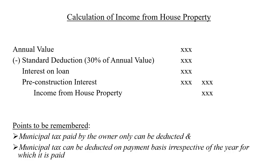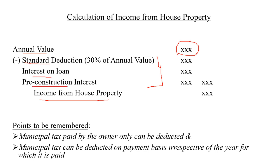First I will explain the format — what are the items that you have to deduct after calculating annual value. After calculating annual value, how to calculate income from house property? We have to claim three deductions only: standard deduction, interest on loan, and pre-construction interest. If we deduct these three values from the annual value, the answer we get is income from house property.